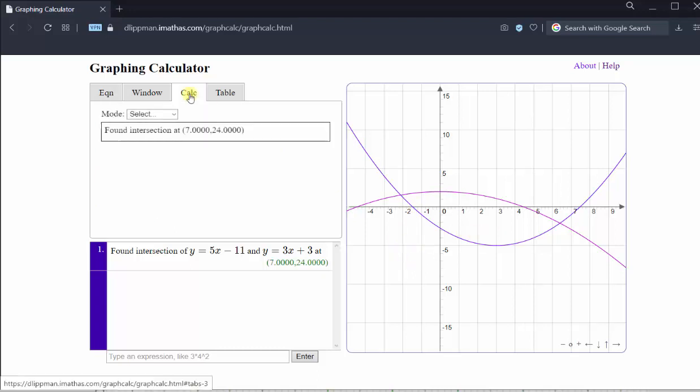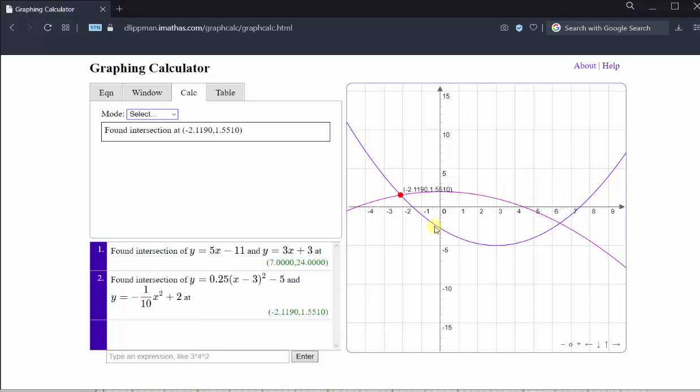Click the Calculation tab. Click the dropdown menu, select Intersection. Draw a box around one of the points of intersection. Let's start on the left. Click, hold, and drag to form the box around the point of intersection. Release the mouse. And we have the first point of intersection.